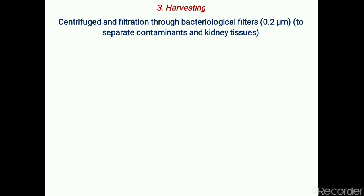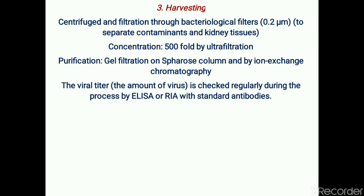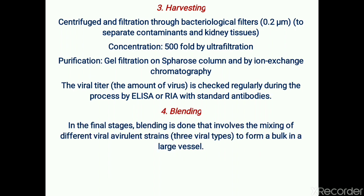The third step is harvesting. Centrifugation and filtration of the viral suspension is done through bacteriological filters for the separation of contaminants and kidney tissues. The next step is concentration — a 500-fold concentration is done by ultrafiltration. This is followed by purification by gel filtration on a Sepharose column and by ion exchange chromatography. The viral titer is checked regularly during the process using ELISA or RIA with standard antiviral antibodies.